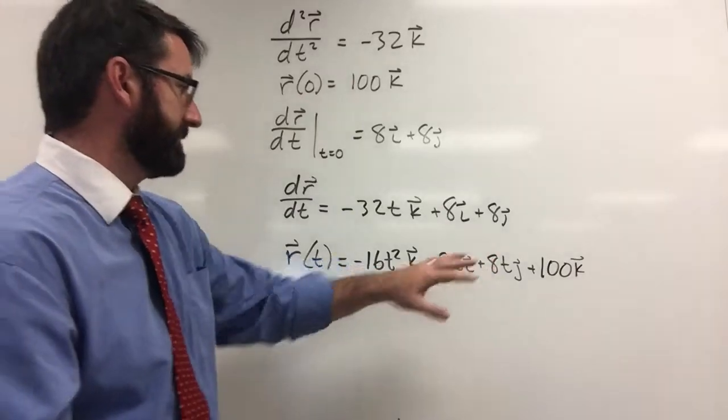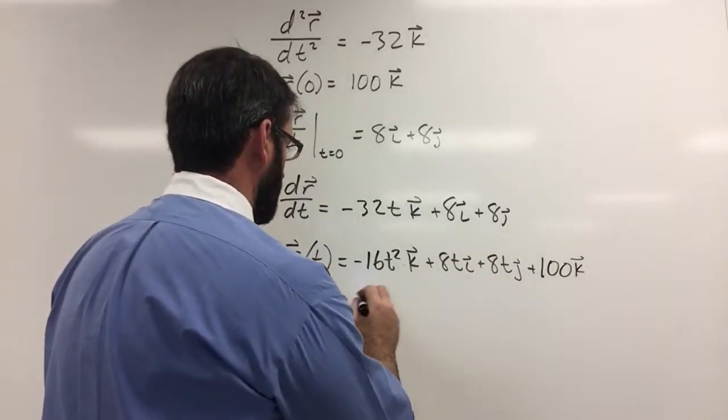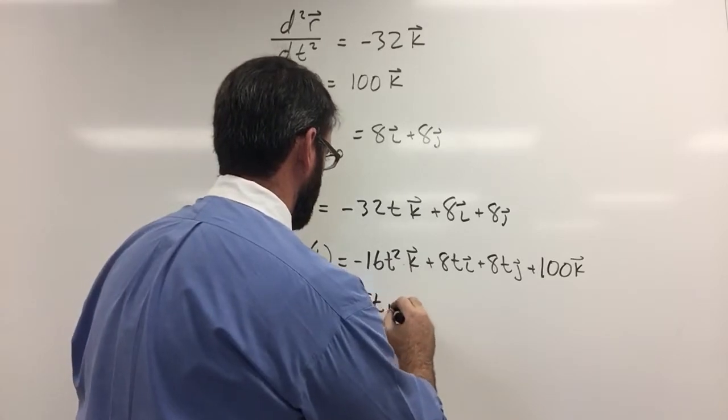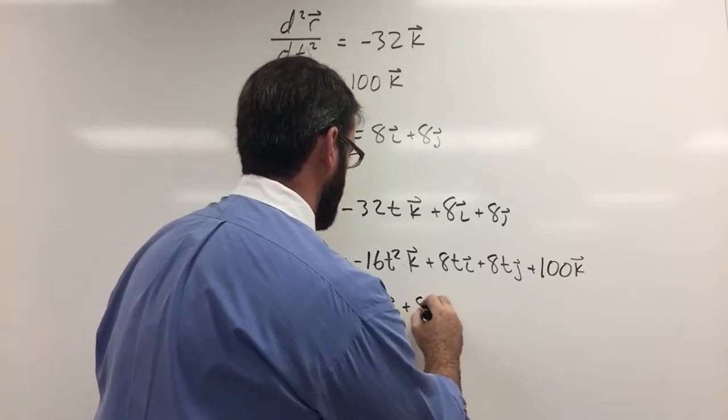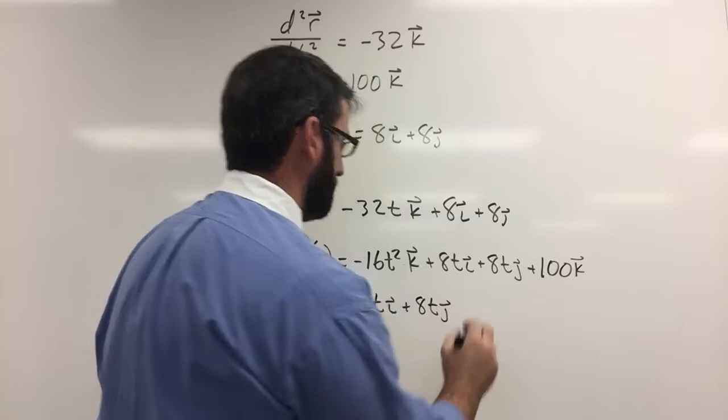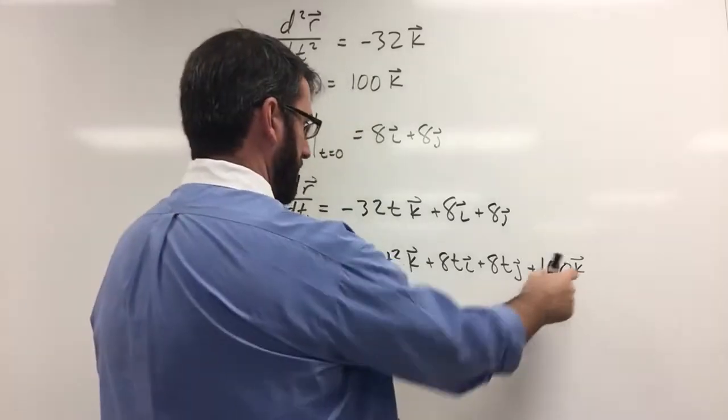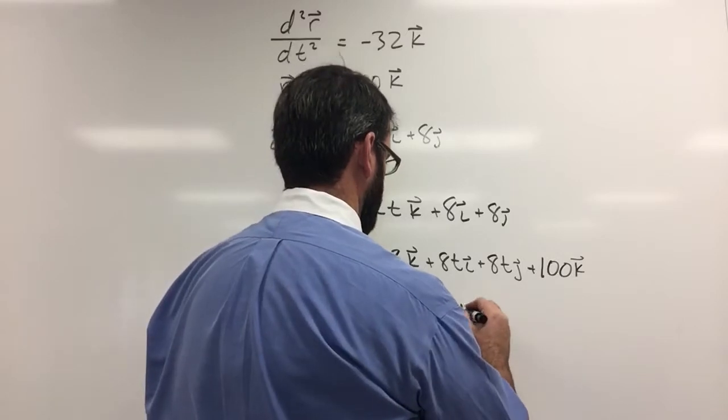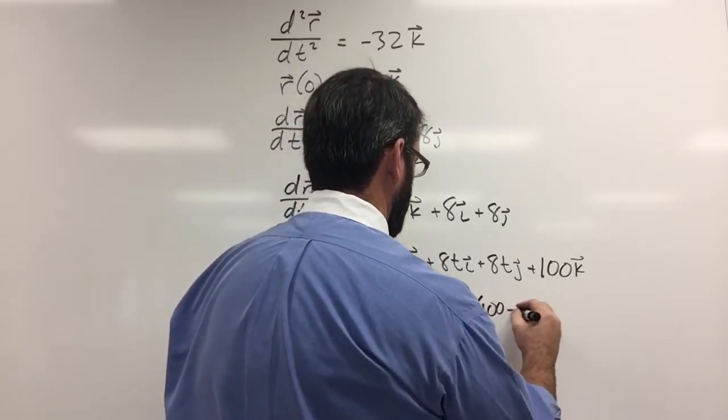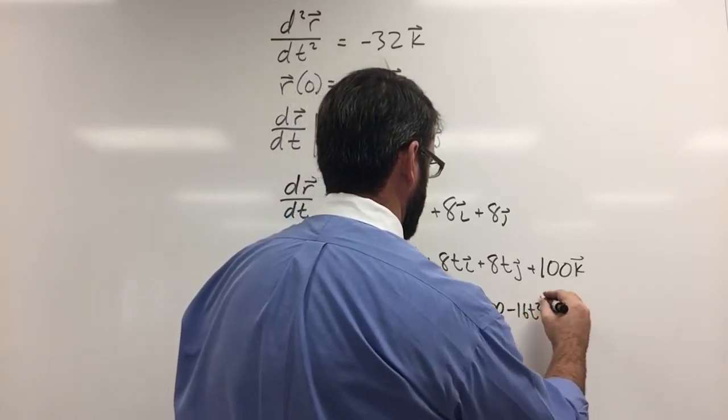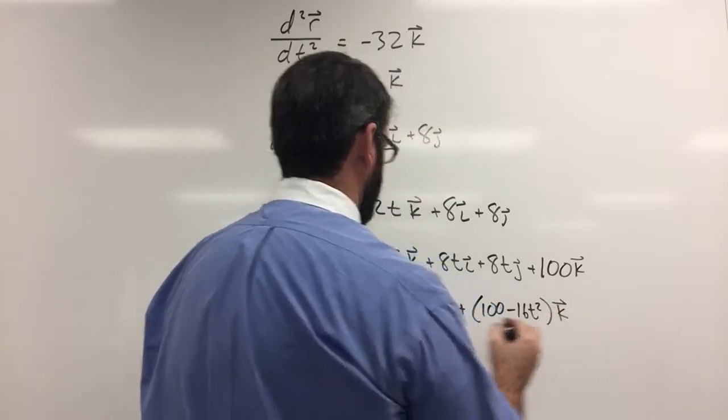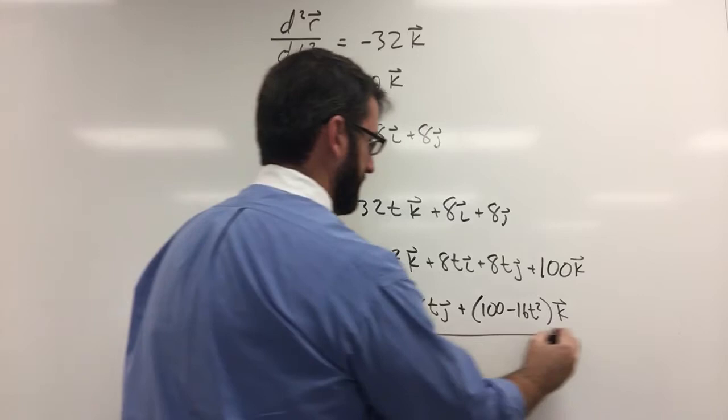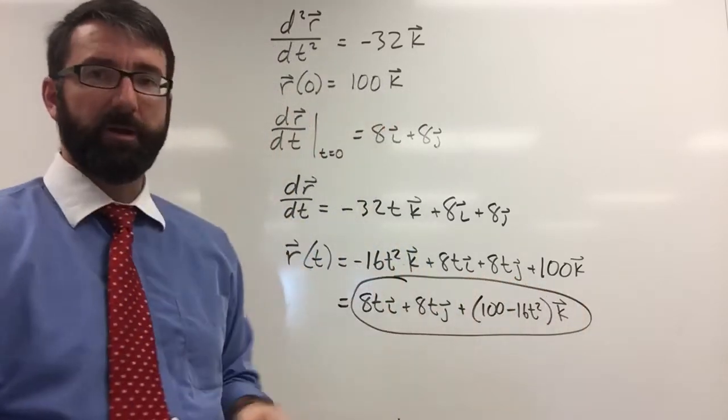And now let's just clean this up. We get, let's put our i first, so 8ti plus 8tj, and then 100k and negative 16t squared k. So we'll plus 100 minus 16t squared k. And that's going to be our answer. That's going to be our position vector.